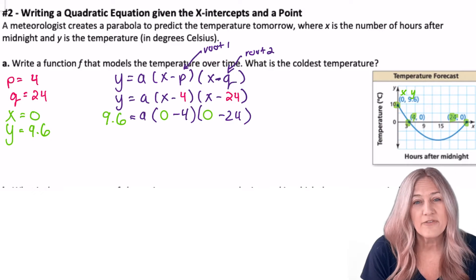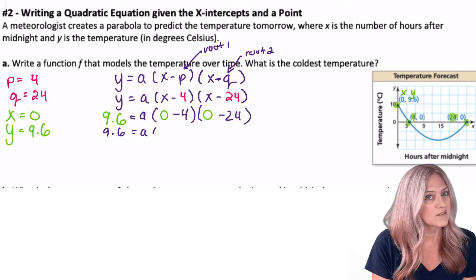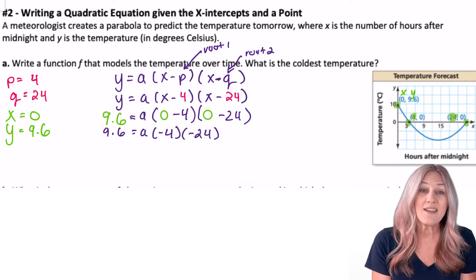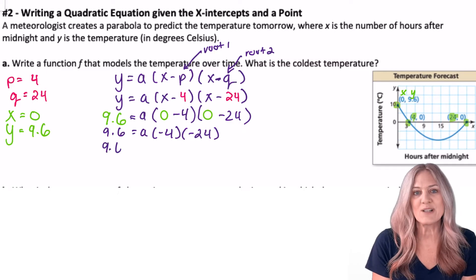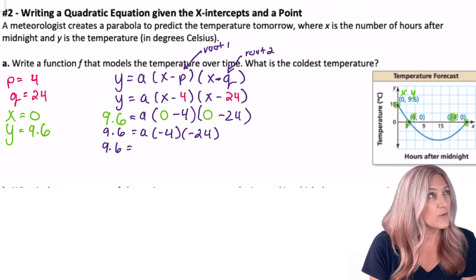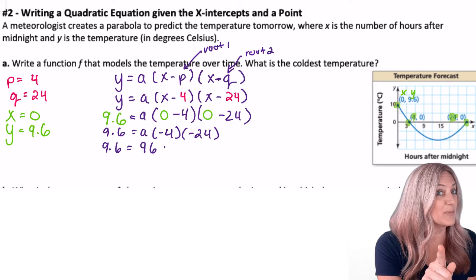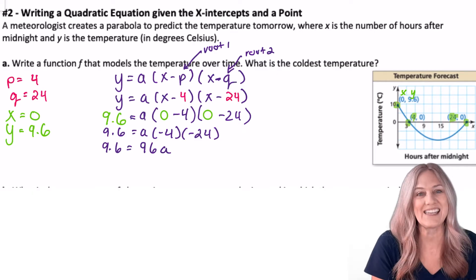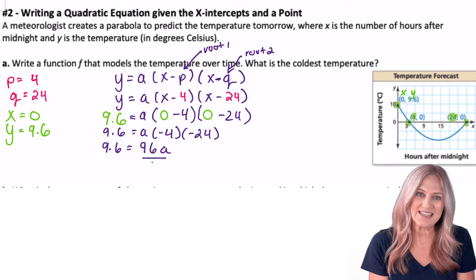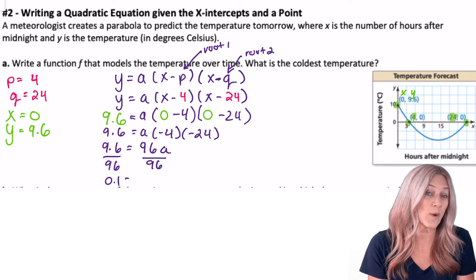To solve, let's first simplify within the parentheses. So 0 minus 4 is negative 4, 0 minus 24, negative 24. So I have y equals a times negative 4 times negative 24. Negative 4 times negative 24 is 96. So y equals—oh wait, y was 9.6. So 9.6 equals 96a. Divide out 96 and a equals 0.1 or 1 tenth.